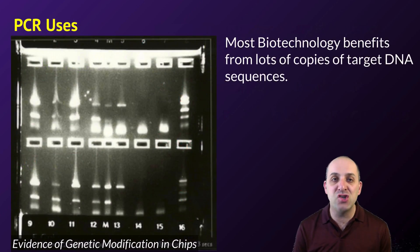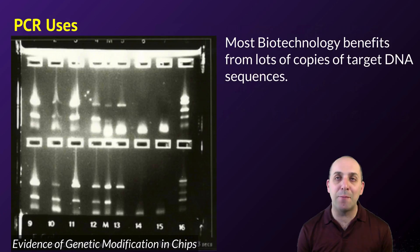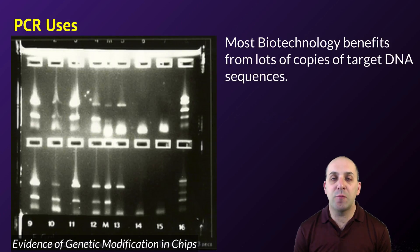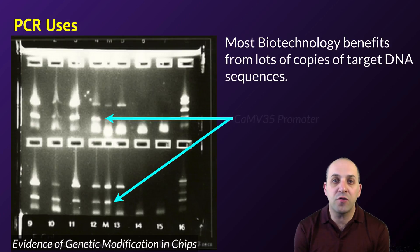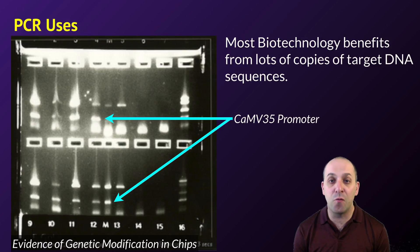Just like our other tools, PCR has wide-ranging uses in biotechnology. Almost every biotechnological application benefits from having a lot of copies of a target DNA sequence. Forensic analysis generally can't work unless fragments are amplified through PCR first. The example here shows an experiment that looked at genetic modification in corn chips — DNA from the grain was amplified through PCR using primers correlated to genetic engineering, revealing a band characteristic of the cauliflower mosaic virus 35 promoter, a common promoter used in the genetic engineering of plants, suggesting the grain was genetically engineered.